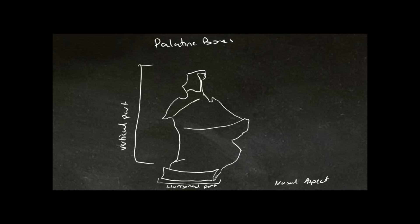Now that we know the vertical part and the horizontal part, we can look at some other features. Here we have the orbital process in the front, here we have the maxillary process, and behind here we have the sphenoidal process. These can help us orientate the bone so we know which way is superior and inferior, and which way is medial and lateral.